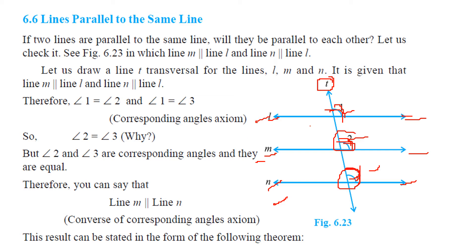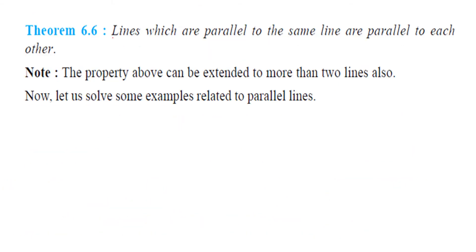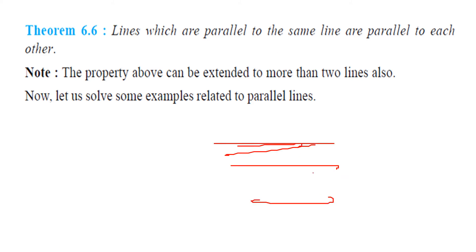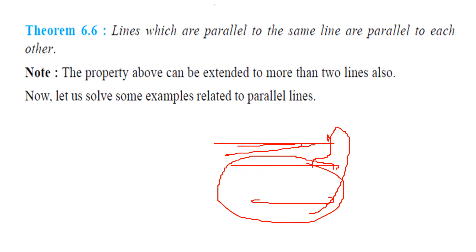So they both have to be equal, and since they are equal, these two lines have to be parallel. So line M has to be parallel to line N. This is the converse of the corresponding angle axiom. Lines which are parallel to the same line are parallel to each other.